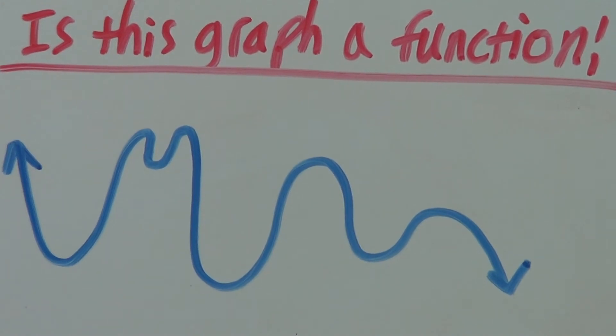Next up, with this graph, this is a bit of a tricky one but still, wherever we put that line, it only has one intersection meaning this graph is a function.